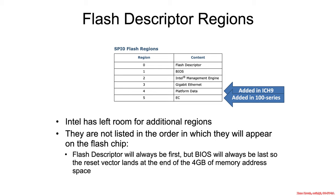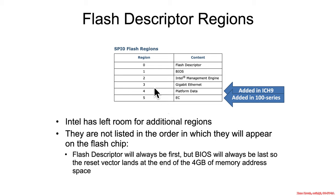Let's talk more about the regions that the flash descriptor describes. Region 0 is the flash descriptor itself, region 1 is the BIOS, region 2 is the Intel Management Engine, etc. These region numbers do not correspond to the order they have to take inside the SPI flash chip — it's just the order that Intel added them.